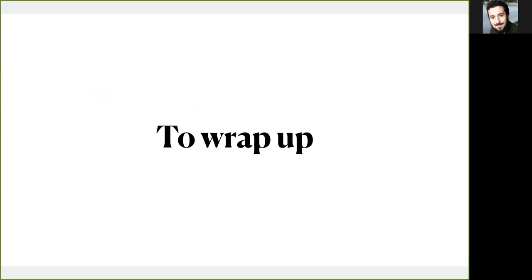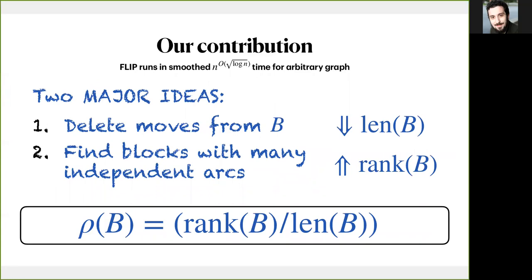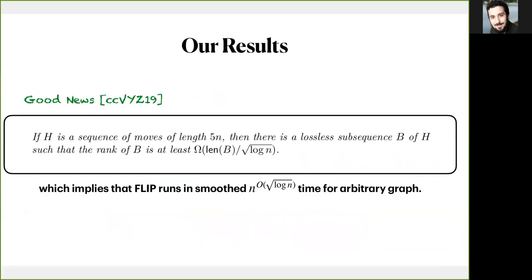To wrap up, we sketch the way that deleting irrelevant moves from the analysis helps in the calculation of a better ratio for the independent arcs inside the sequence of flip execution. This gives us the complexity of n to square root of log n. Always in the constants there is a hidden linear dependence with the bound of the density of the model, the phi bound.